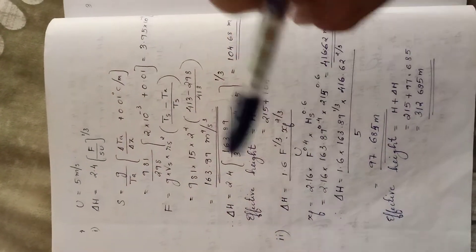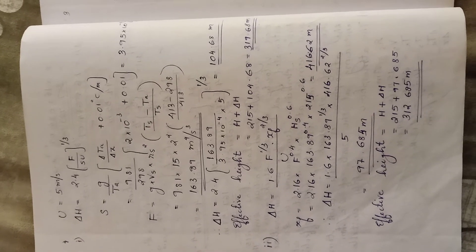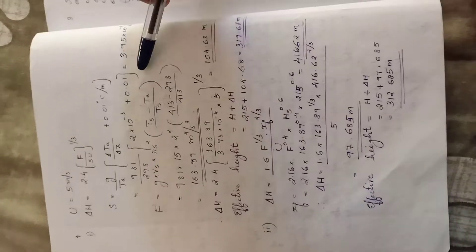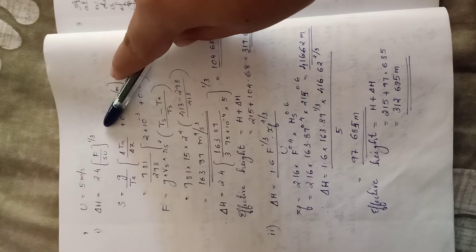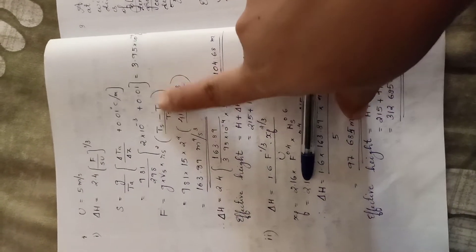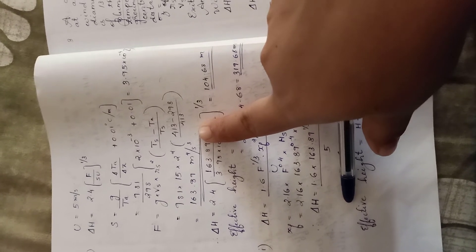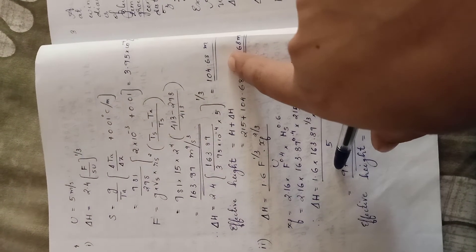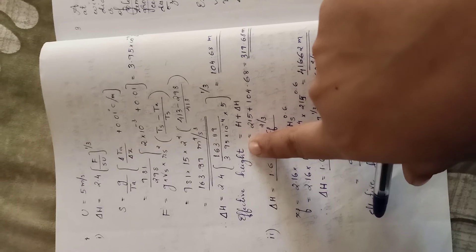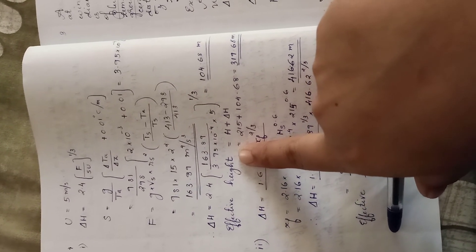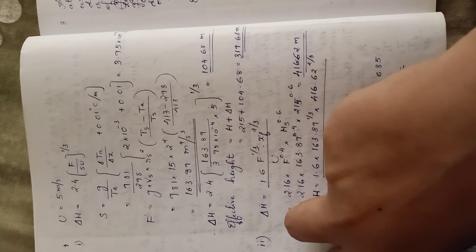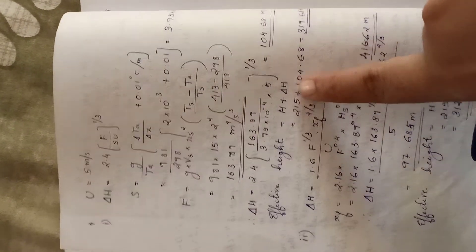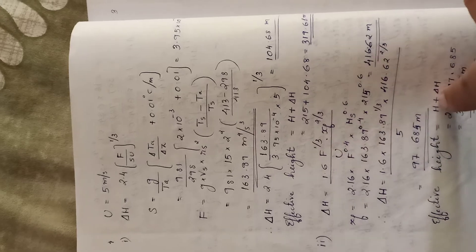For stable conditions, applying Briggs' equation and substituting the values, we compute delta H. For the unstable condition, delta H equals 104.680 meters, giving effective height H equals stack height plus delta H. The effective height is approximately 115 meters. For the stable condition, H equals 11.7 meters plus plume rise, giving the effective height for that case.